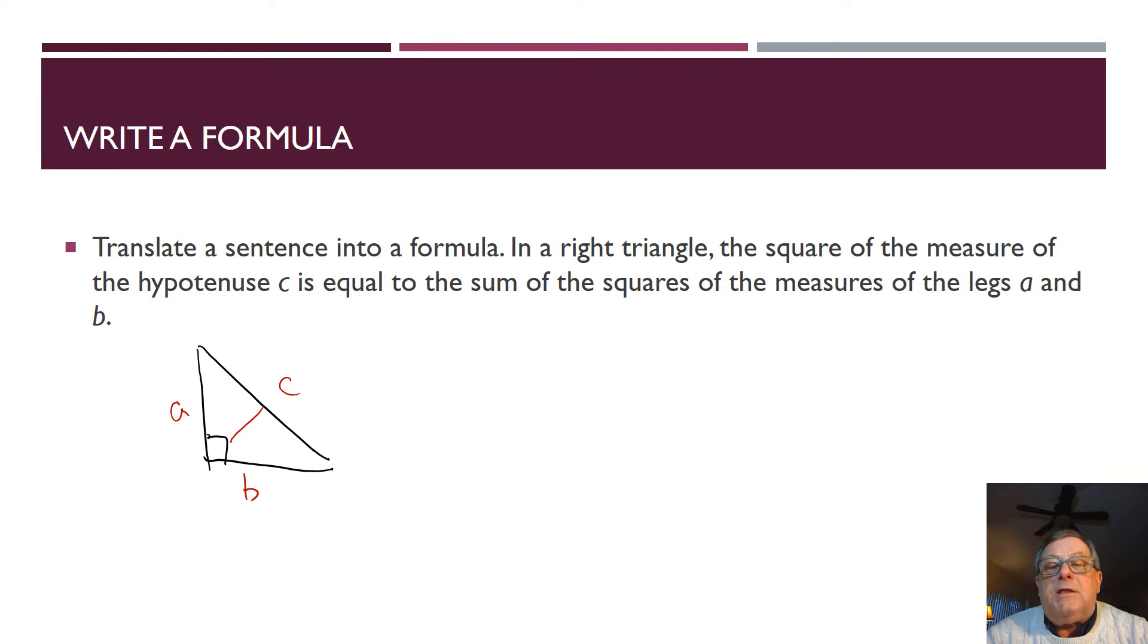So, let's go back to our sentence. In a right triangle, the square of the measure of the hypotenuse is equal to the sum of the squares of the measures of legs A and B.